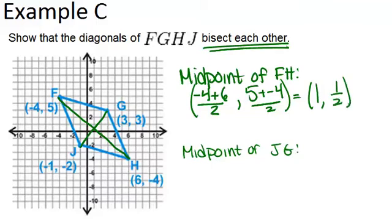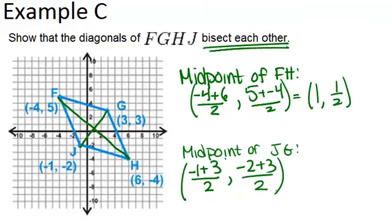So if the midpoint of JG is also 1, 1 half, then we're in good shape. So for JG, the midpoint will be negative 1 plus 3 over 2 for the X coordinate, and negative 2 plus 3 over 2 for the Y coordinate. And when you simplify that, you get 1, again, 1 half. So because they have the same midpoints, that means that those diagonals must bisect each other. Because at the midpoint, they've cut each other in half.